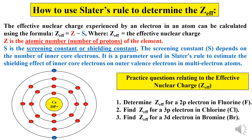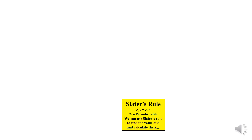Remember, the effective nuclear charge experienced by an electron in an atom can be calculated using the formula Z-effective equals Z minus S, where Z is the atomic number of the element and S is the screening or shielding constant. We use Slater's rule to find the value of S. You can find the atomic number using the periodic table for the particular element in question, and then calculate the Z-effective for the electron in question.